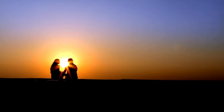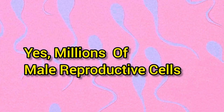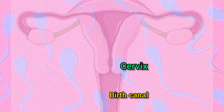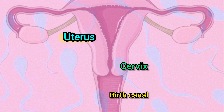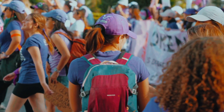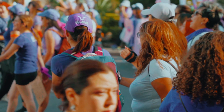At the point of ejaculation, millions of sperm — yes, millions — are released, which then attempt to move through the birth canal, cervix, and the uterus to reach the fallopian tubes. For the sperm, this is quite a long journey, and many are lost along the way.